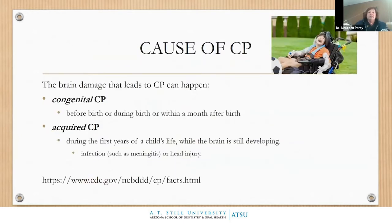What are the causes of CP? Congenital CP happens before birth, during birth, or within the first 28 days of life. After that we call it acquired CP, which usually occurs in the first year when the brain is still developing — commonly caused by infections like meningitis or a head injury.